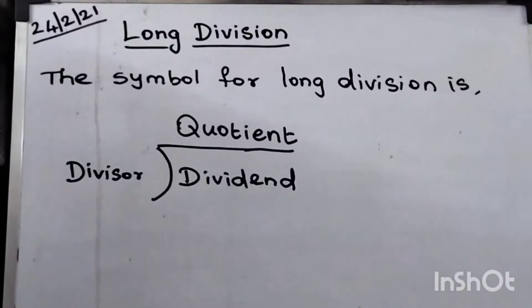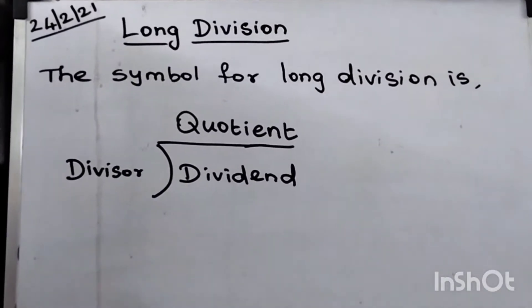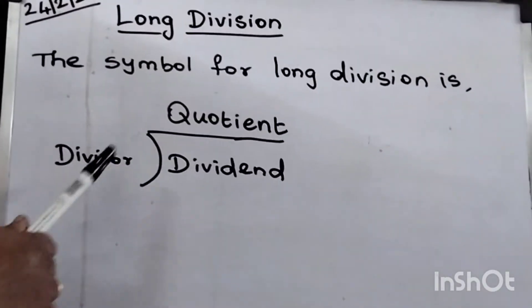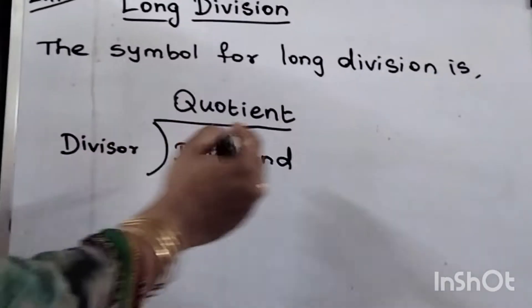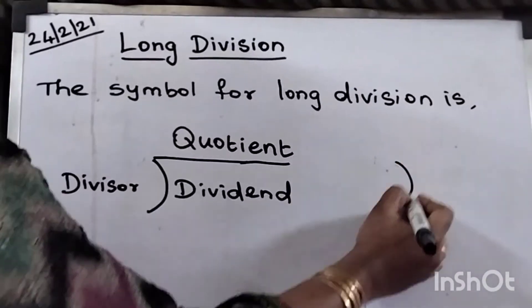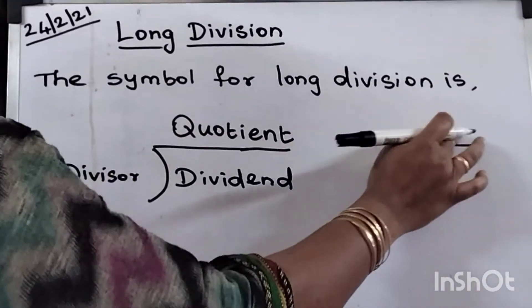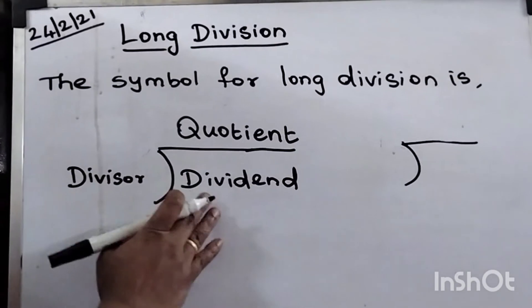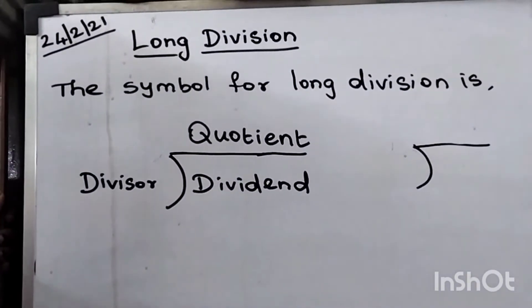Are you all ready children? Let's continue with the long division method. Remember, this is the symbol for long division. The terms are arranged like this: divisor, dividend, quotient, isn't it?